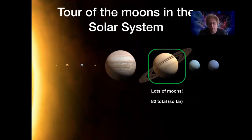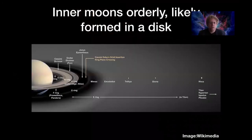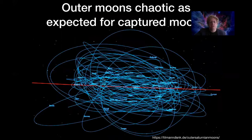Saturn has 82 known moons, and almost certainly more that we haven't detected. The inner moons are orderly and likely formed in a disk, orbiting in the same plane as the rings. The rings themselves are probably remnants of previously destroyed moons ground up into ring structures. Further out, Saturn's outer moons have scattered, chaotic orbits that look like a bird's nest — consistent with being captured asteroids or other small bodies from the solar system.